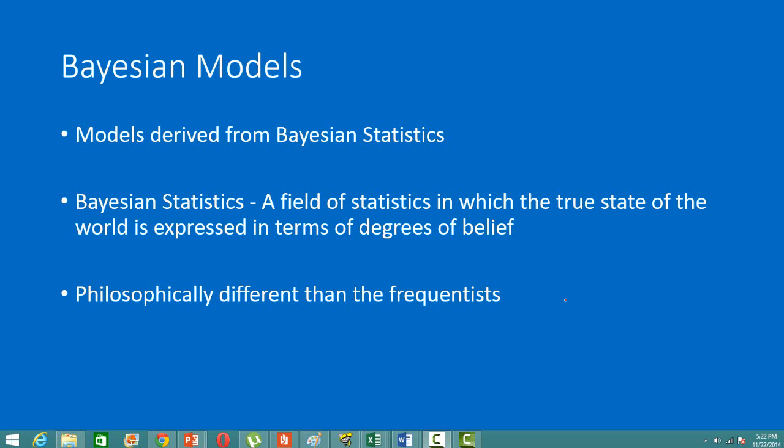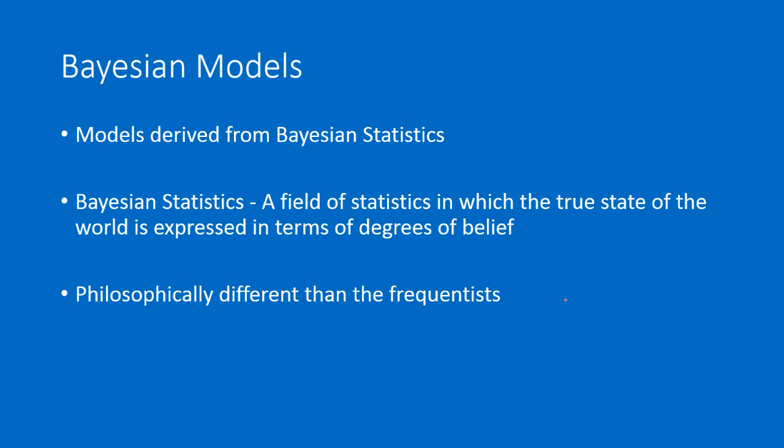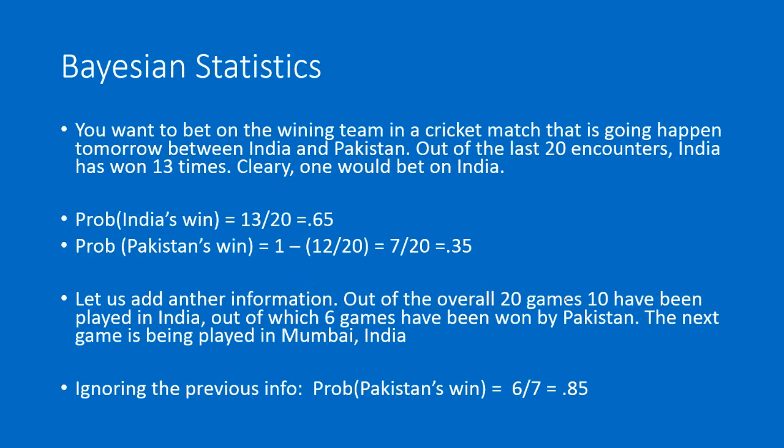We will see the difference by taking an example. Let us say you want to bet on the winning team in a cricket match between India and Pakistan. There have been 20 encounters so far — India has won 13 times and Pakistan has won 7 times — and you want to bet on who is going to win tomorrow's match. Clearly one will bet on India, since the probability is 13 by 20, which is 0.65, higher than Pakistan's 0.35.